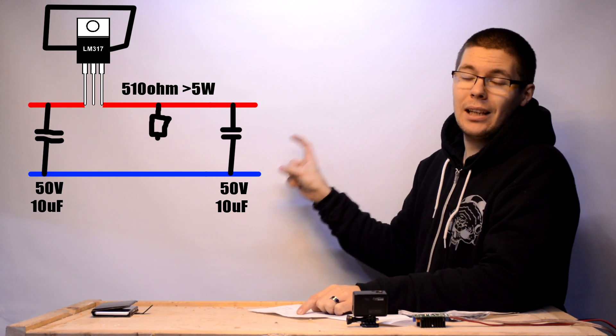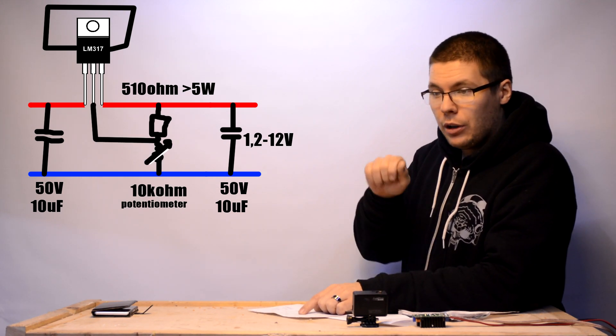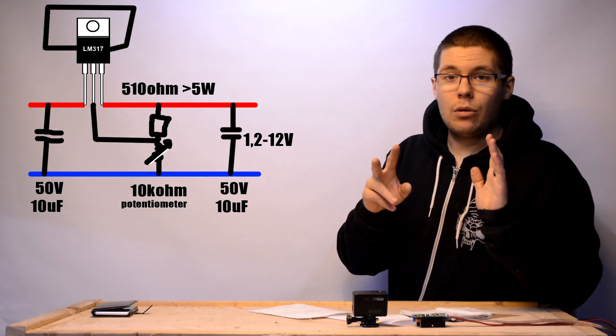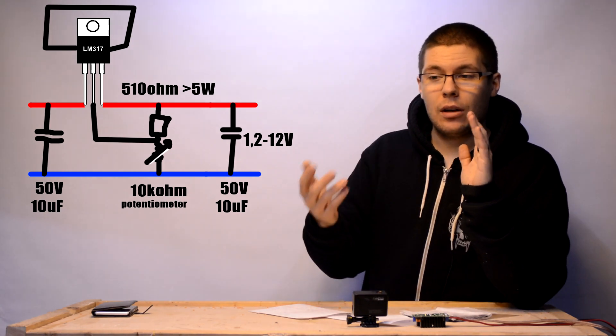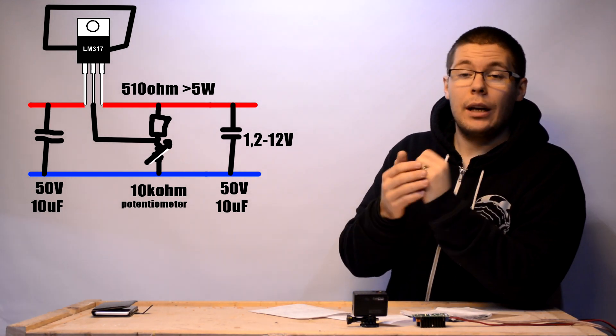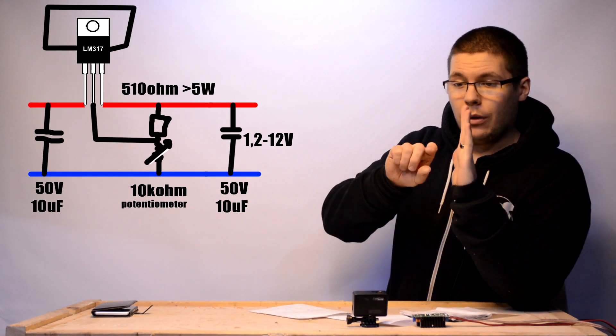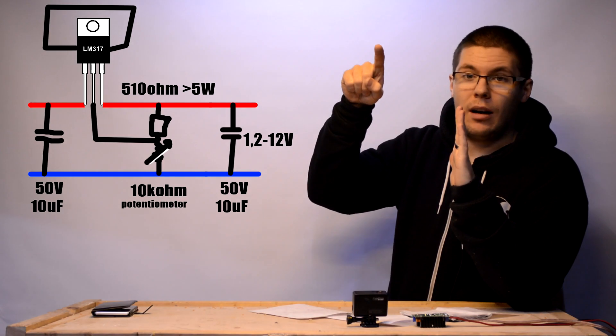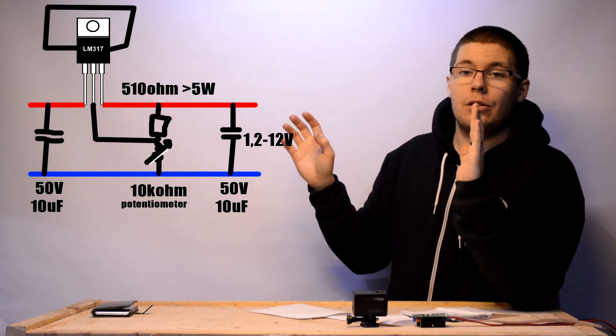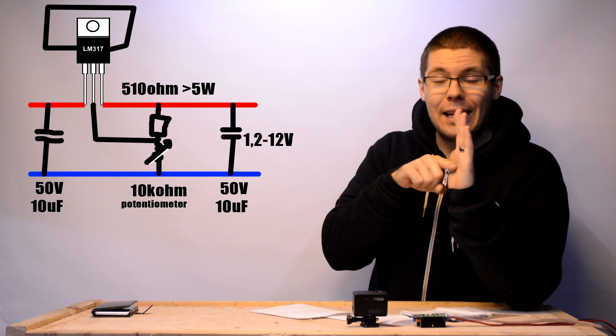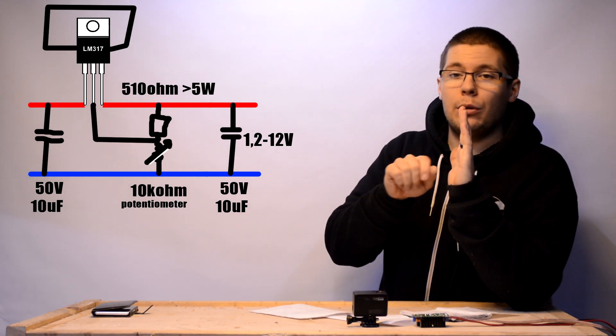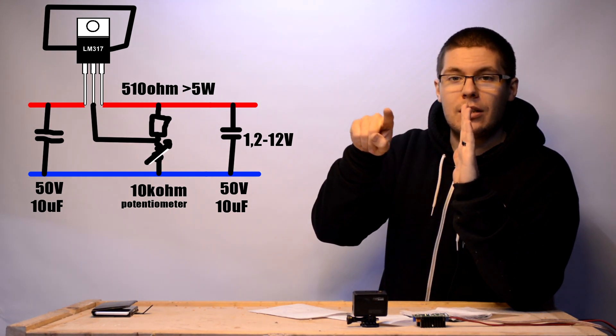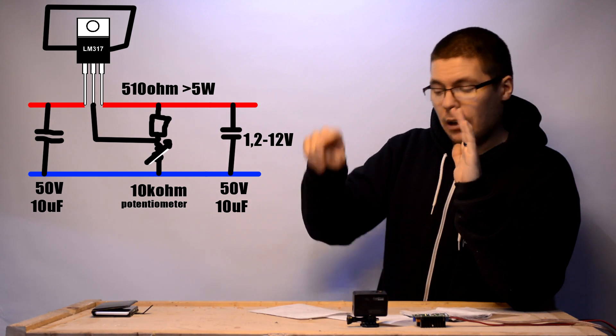And here you put 10 kilo ohms adjustable potentiometer. So the potentiometer does, they come in two kinds of ways. First is logarithmic and second is linear. And logarithmic is that the more you turn it, it slower starts to rise and in the end it just peaks up. It's not very good in this operation. So you must buy a linear adjustable potentiometer to here. So whenever you turn it, it rises in steady phase from 0 up to 10 kilo ohms.